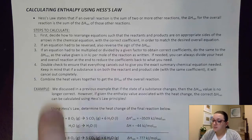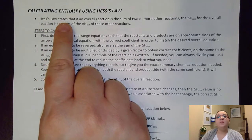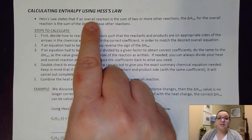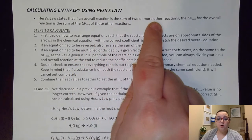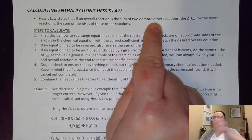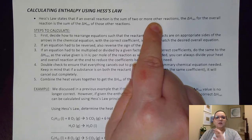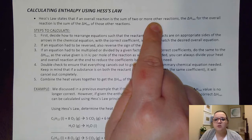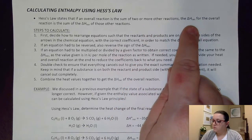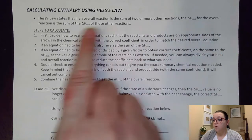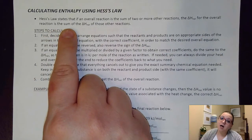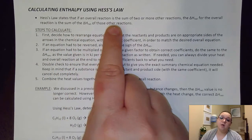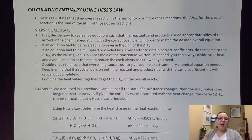Hess's law states that if an overall reaction is the sum of two or more other reactions that have been manipulated correctly to get reactants and products on the correct side and coefficients correct, then the delta H of the overall reaction is simply the sum of the delta H of those other reactions. I would just add them up at the end once I made sure that the reactions could be added up.